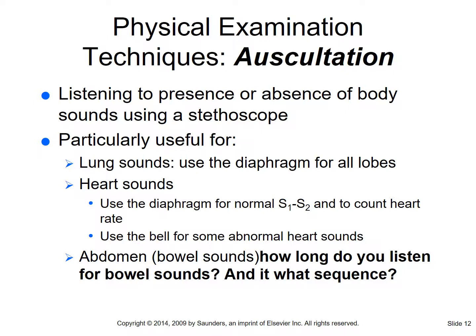We use the bell - the smaller side - for abnormal heart sounds, going along the valve areas. You can also hear a bruit, which is a swishing sound in an artery. For the abdomen we listen for bowel sounds using the diaphragm. Normal bowel sounds are between 5 to 30 per minute - considered normal or 'present' depending on your facility's charting terminology - but it's the same concept.